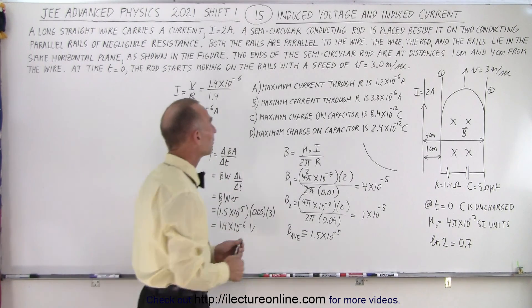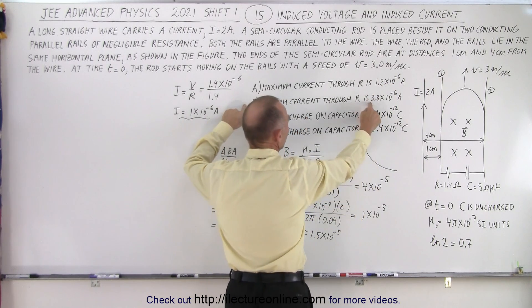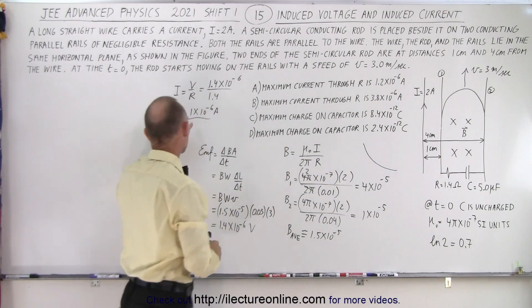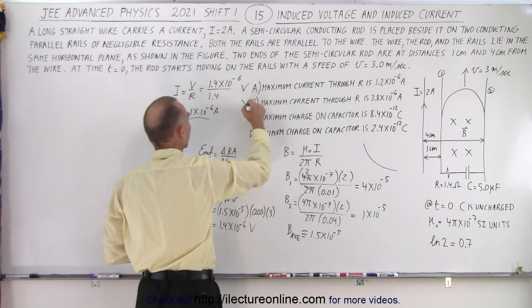And now they give us two choices. They give us a at 1.2 times 10 to the minus 6 or b at 3.8 times 10 to the minus 6. Of course our answer is much closer to a so let's say a is correct, b is not.